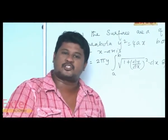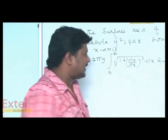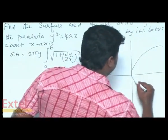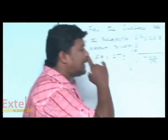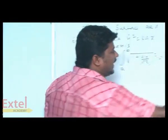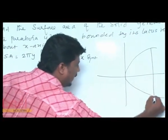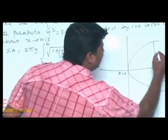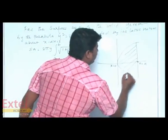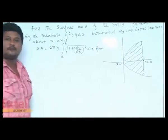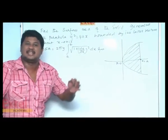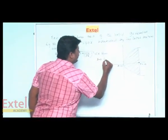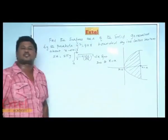We know that y squared equals 4ax, which opens to the right. Since it is bounded by its latus rectum, the limit ranges from x equals 0 to x equals a. This is the region for which we are finding the surface area.